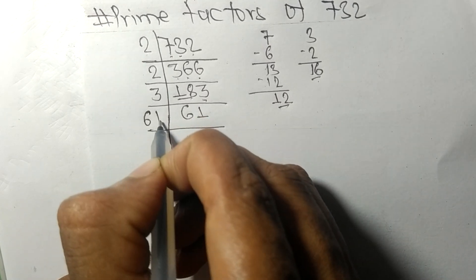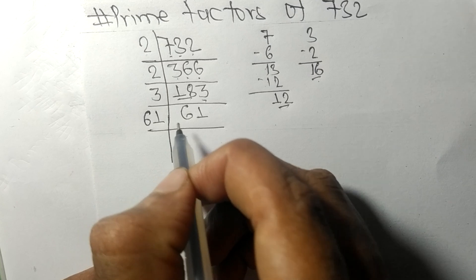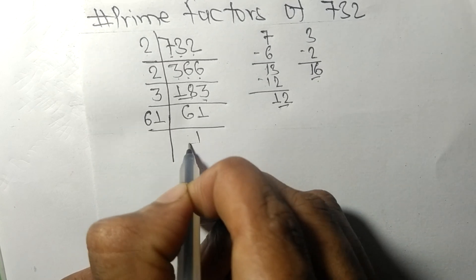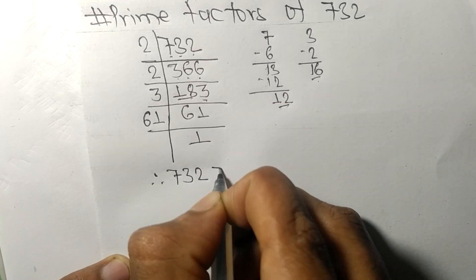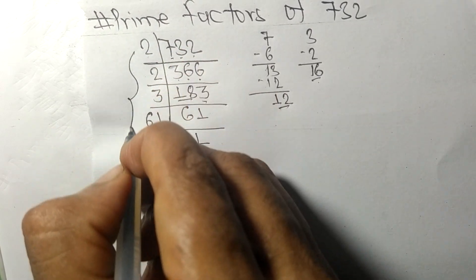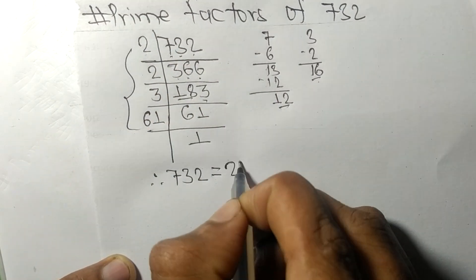And on dividing we get 1. Therefore, 732 is equal to, from this side, it is 2 times 2 times 3 times 3 times 61.